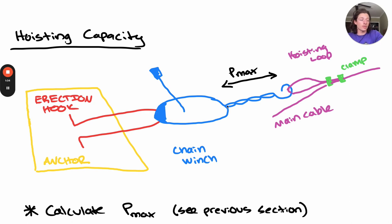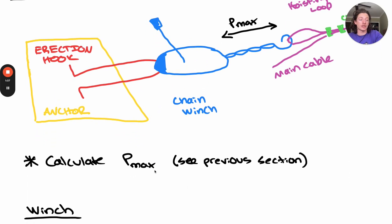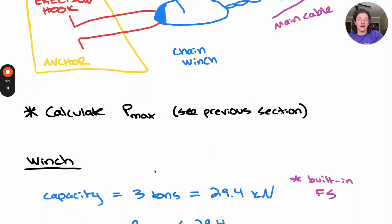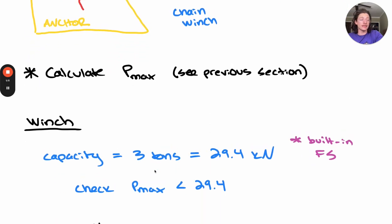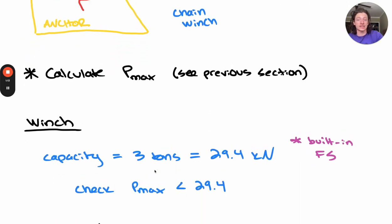First, we're going to compare this to our three-ton winch capacity. Because the factor of safety is already built into the winch rating, this is a simple calculation. The winch has a three-ton rating, giving it approximately 29.4 kilonewtons of maximum force. In this case, we only need to check that Pmax is less than 29.4 kilonewtons.